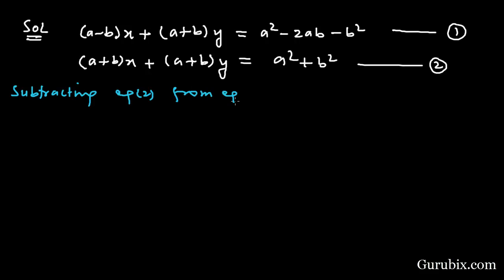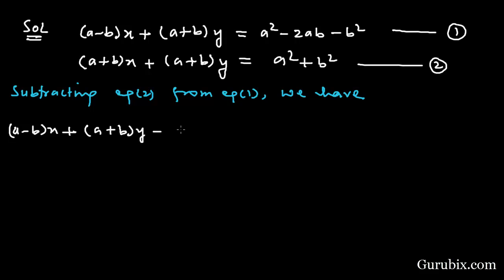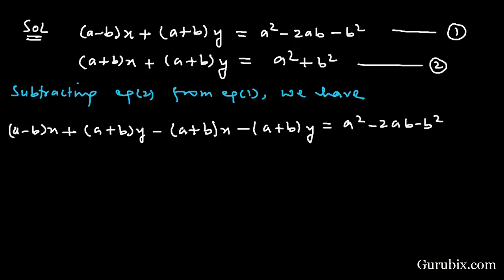So we shall just subtract equation number two from equation number one. Subtracting equation two from equation one, we have: (a minus b)x plus (a plus b)y minus (a plus b)x minus (a plus b)y equals a squared minus 2ab minus b squared minus a squared minus b squared.